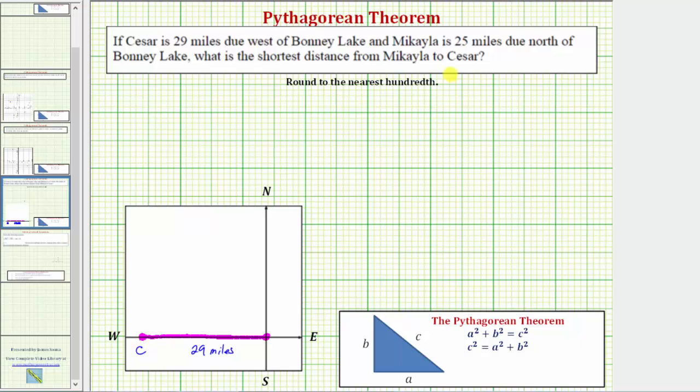And let's label this point C for Caesar. And then Michaela is 25 miles north of Bonnie Lake. So if north is this direction, Michaela would be 25 miles in this direction. Let's say here, so this length is 25 miles, let's label this point M.